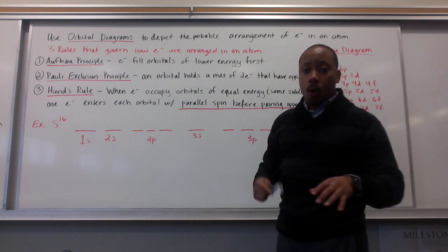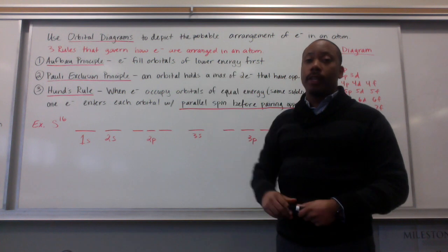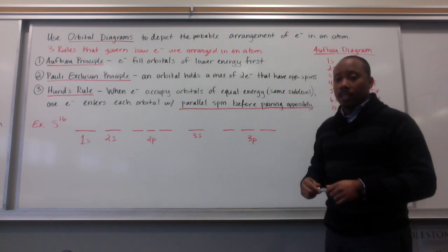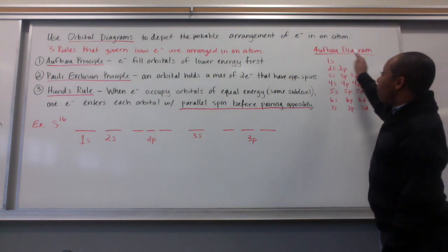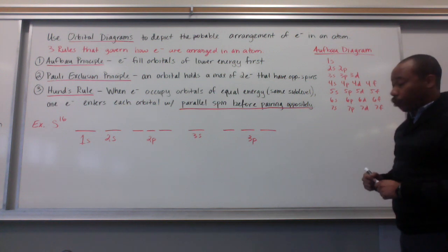It says that electrons fill orbitals from the lower energy first. So, starting at 1s, working its way down. Now, working its way down may not be as clear cut as it sounds. We use the Aufbau diagram to show how electrons fill different orbitals.